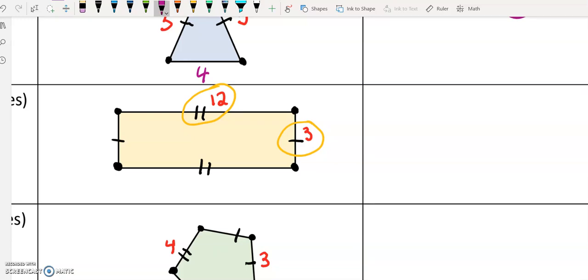So using our context clues, since this has two lines, and so does this one, this must also be 12. This one has one line. So does this one. So this one must be a three.